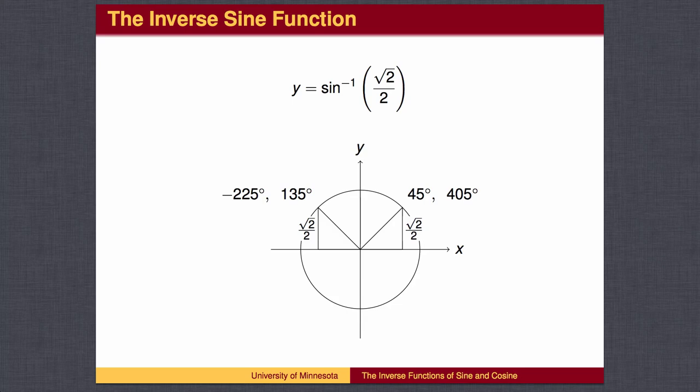We could go around a full circle to 405 degrees. We could go backward to negative 225 degrees. Which one should we pick?